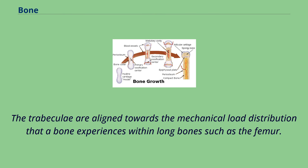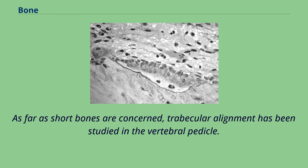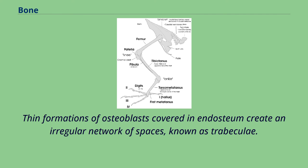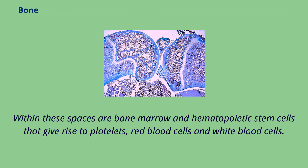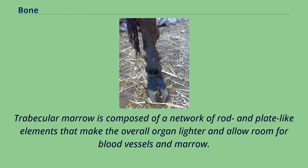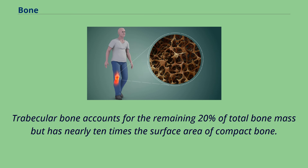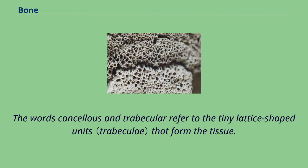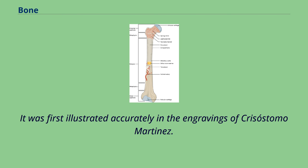The primary anatomical and functional unit of cancellous bone is the trabecula. The trabeculae are aligned towards the mechanical load distribution that a bone experiences within long bones such as the femur. Thin formations of osteoblasts covered by endosteum create an irregular network of spaces known as trabeculae. Within these spaces are bone marrow and hematopoietic stem cells that give rise to platelets, red blood cells, and white blood cells. Trabecular bone accounts for the remaining 20% of total bone mass but has nearly 10 times the surface area of compact bone. The words cancellous and trabecular refer to the tiny lattice-shaped units that form the tissue.